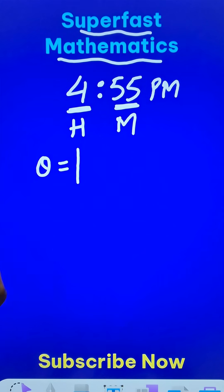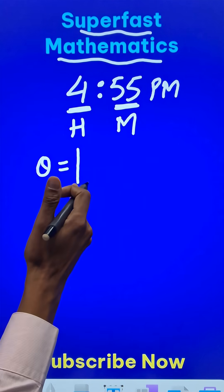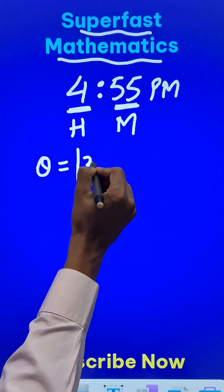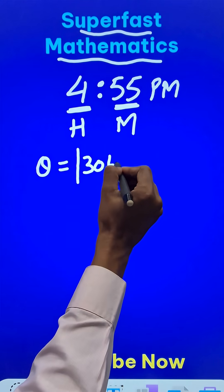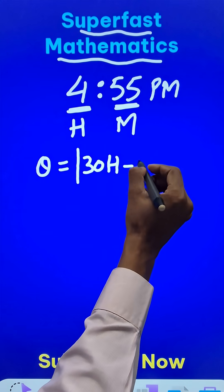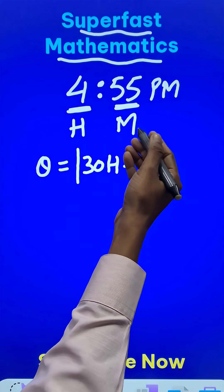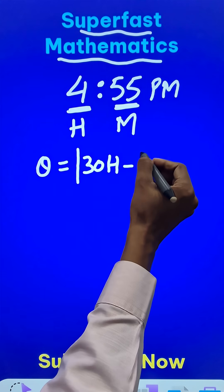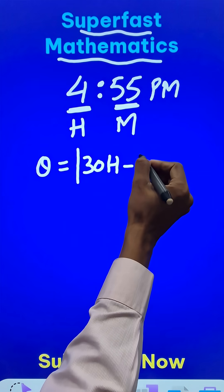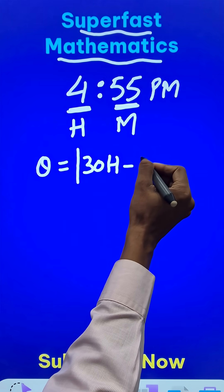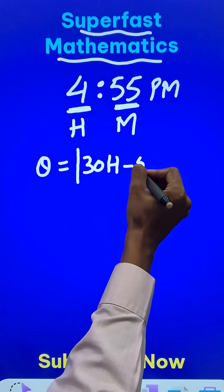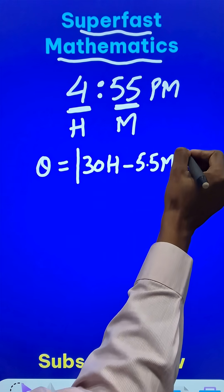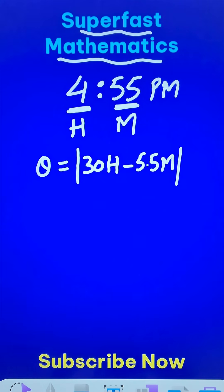Theta is the angle. I will use an absolute value symbol here because the angle cannot be negative. So the formula is: 30 times the hours minus 5.5 times the minutes. The 5.5 comes from 3 plus 2.5, which equals 5.5 — you can also write it as 11 over 2, but 5.5 works best. So the formula is θ = |30H - 5.5M|.